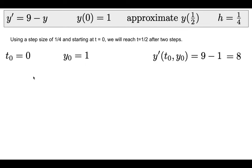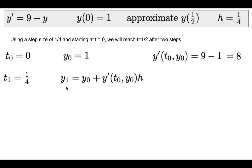To get our next t value, we add a horizontal step size of 1/4 to our current t value. So t₁ = 0 + 1/4 = 1/4.